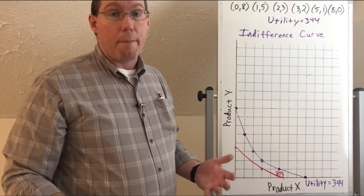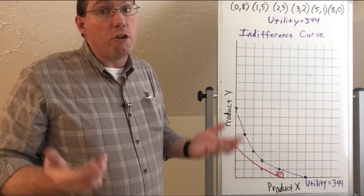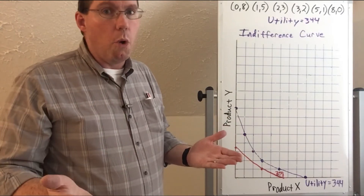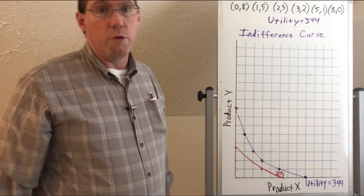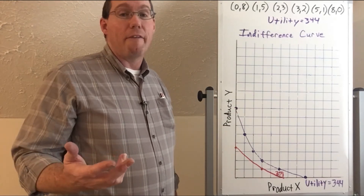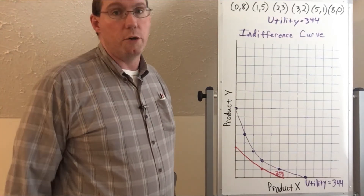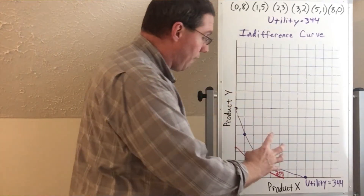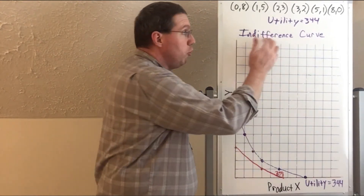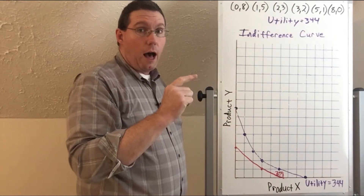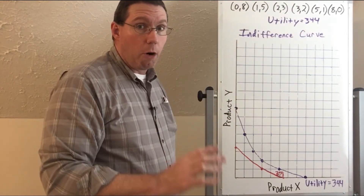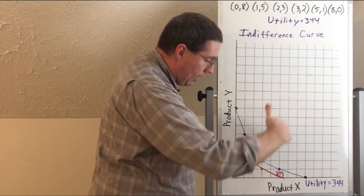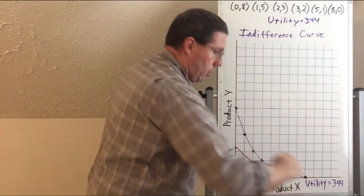This person does not care whether they consume at any point along this curve — every single point gives them exactly 344 utility, so they are indifferent about which combination of goods they consume because all give the same satisfaction. Rational people prefer to be better off, but when two choices give the same utility you can't be better off by picking one over the other. The main reason we graph this is to understand that a true indifference curve under the law of diminishing marginal benefit will be an inward bowing curve, not a straight line.